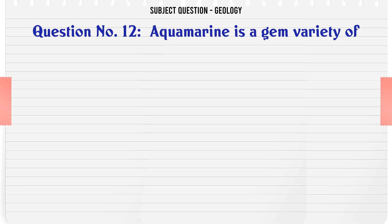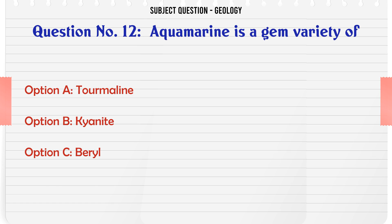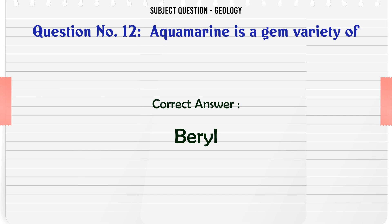Aquamarine is a gem variety of: A. Tourmaline. B. Kyanite. C. Beryl. D. Topaz. The correct answer is Beryl.